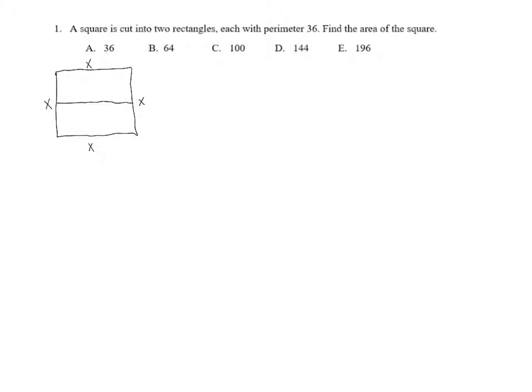Now, if we look at the rectangles that it's cut into, we know that each of them has the same perimeter, so we know that each of them has to be the same size. That means that each of these widths of the little rectangles is going to be x over 2.